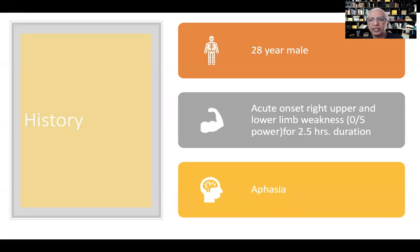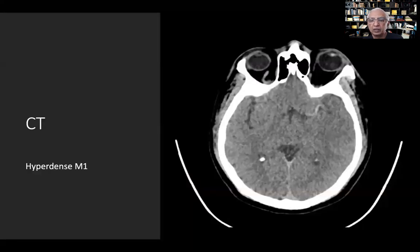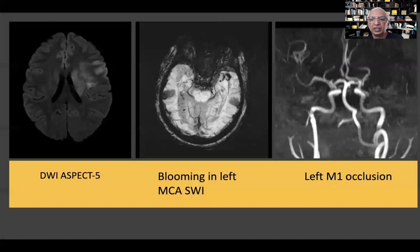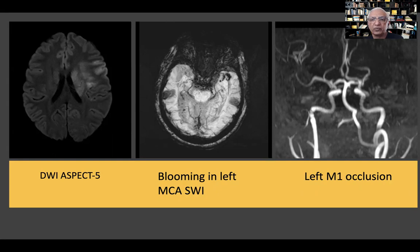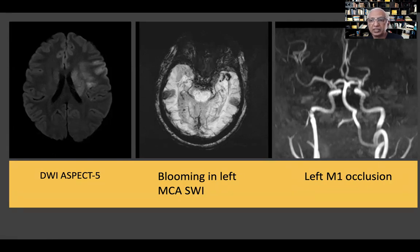Here is a 28-year-old male patient who came with acute onset upper and lower limb weakness for two and a half hours, aphasic. You can see a dense MCA on CT — a good sign, because we know this will come out easily. We just have to ensure fragmentation does not take place. The DW ASPECT shows a score of five, but this translucent diffusion restriction often reverses itself. The blooming on SWI extending into the branches confirms it is an RBC clot extending into the branches.